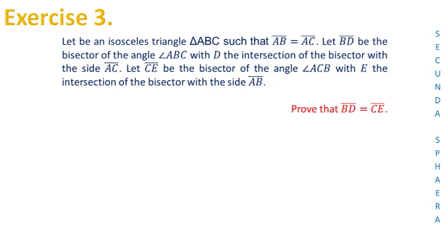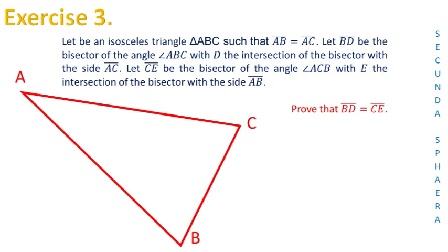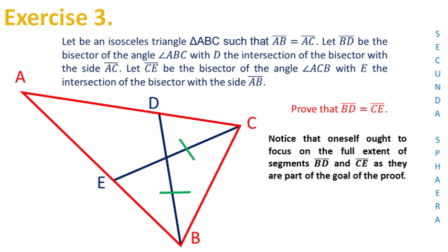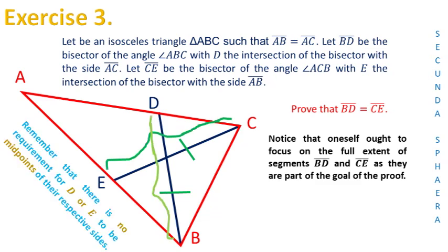As a guide you can use the following drawing. I'll start drawing an isosceles triangle ABC, then draw the bisectors of angles ABC and ACB, and mark the points D and E. Remember that for solving this problem it is needed to prove that the segments BD and CE are equal. One may focus on these segments in their entire length and on the triangles in which they are sides, as they are the main objective of the problem. Notice that there is no reason to suppose that the points D or E are midpoints of the respective sides.